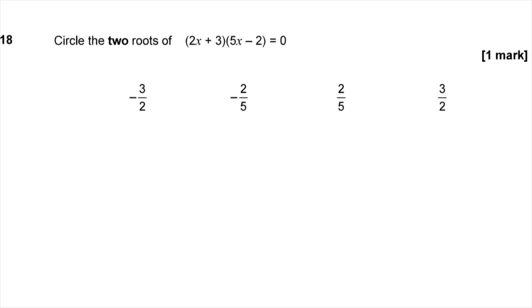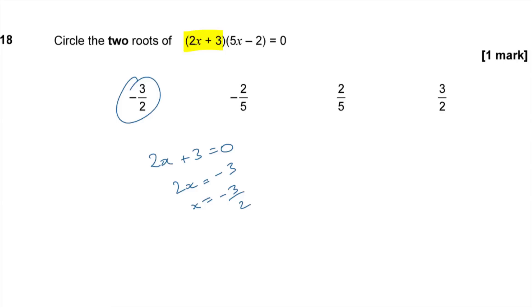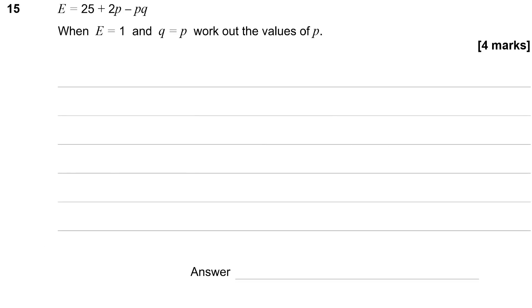Question 18: Circle the two roots of (2x plus 3)(5x minus 2) equals zero. You get the roots when the equation equals zero. Those two things multiplied together give zero, so one or the other must be zero. If 2x plus 3 equals zero, then 2x equals minus 3, so x equals minus 3 over 2 — that's one root. Or if 5x minus 2 equals zero, then 5x equals 2, so x equals 2 fifths — that's the other root.